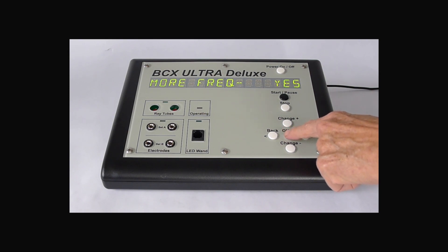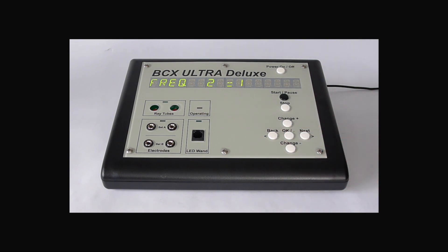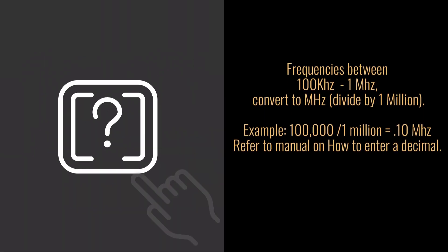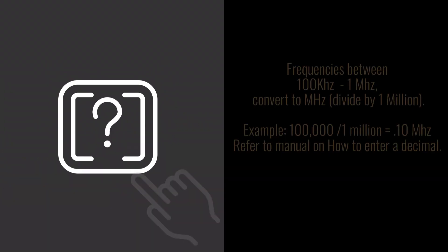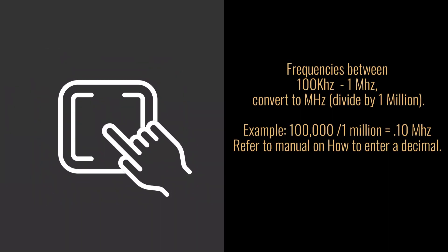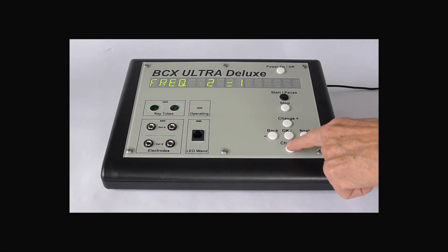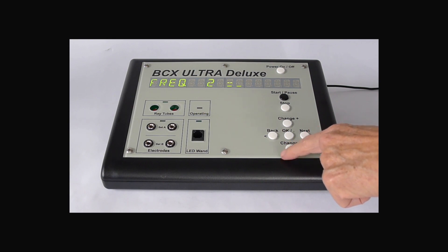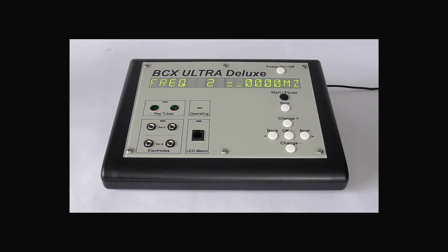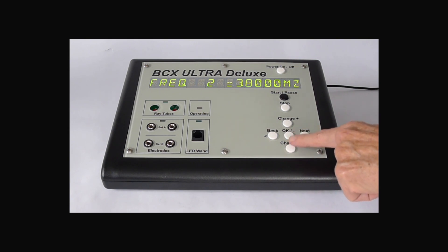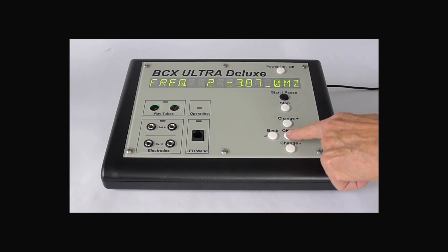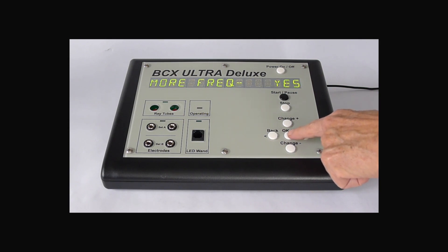You will see more frequencies yes. Press ok. Frequency 2 equals 1. Press change minus. You will see a blinking 1. Press change minus again and it reads 4 megahertz. Now this is at the highest maximum frequency of the BCX Ultra Deluxe. Press change minus and next to decrease the frequency if needed. Then press ok. You will see more frequencies yes. Press ok.